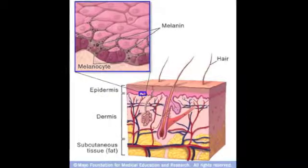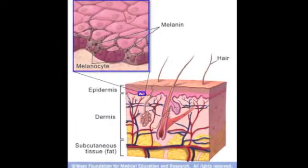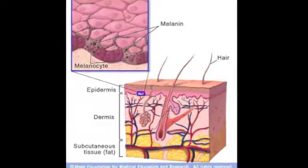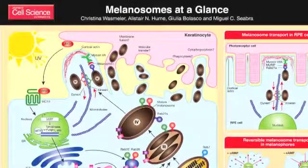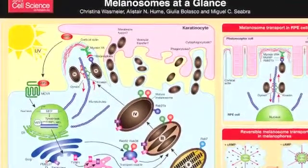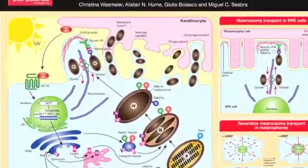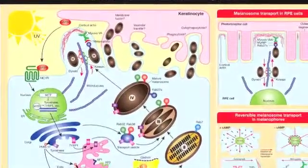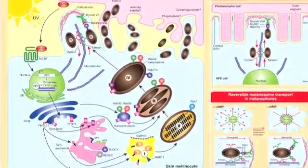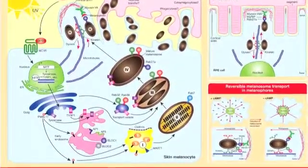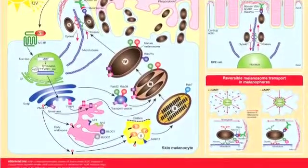Melanin is produced by a group of cells called melanocytes that are located in the base layer of our skin. Melanocytes produce granules called melanosomes. When they are full of pigment, they are transferred to neighboring cells called keratinocytes. These neighbor cells migrate to the superficial layer of the skin, and that's when the pigmentation of our skin occurs.